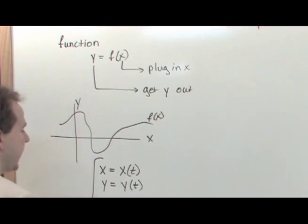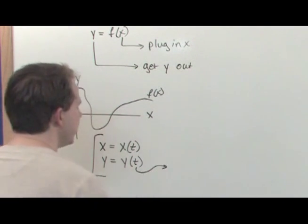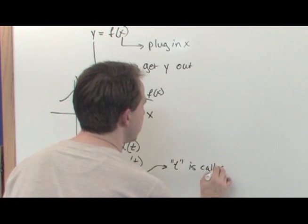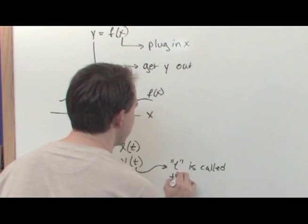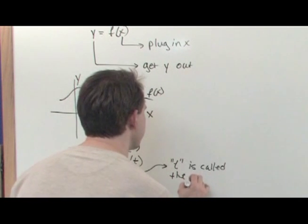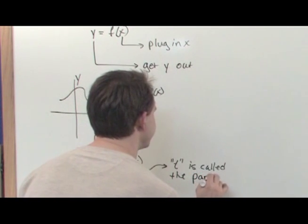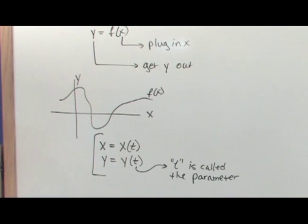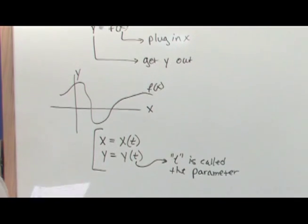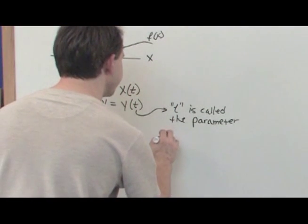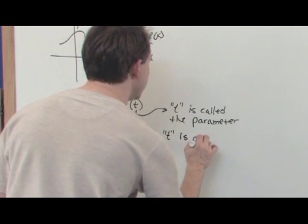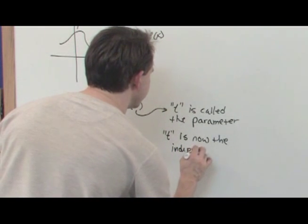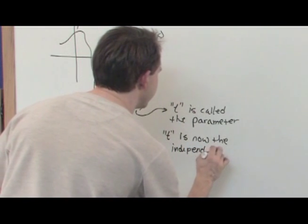So this is it. And I'll talk about y. T here is called the parameter. And that's why it's called parametric equations because it's a parameter. And it's called a parameter because this is a parametric equation. That's where the name comes from. So what happens is t is now the independent variable.